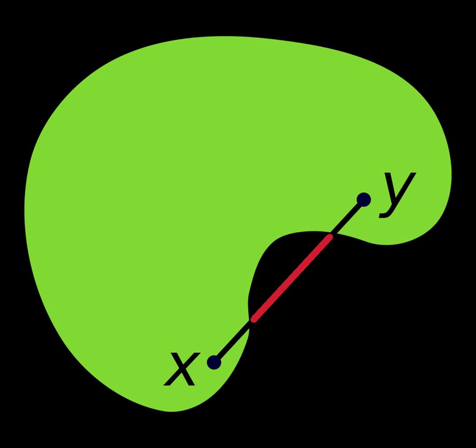Let S be a vector space over the real numbers, or more generally, over some ordered field. This includes Euclidean spaces. A set C in S is said to be convex if, for all X and Y in C and all t in the interval [0,1], the point (1-t)X plus tY also belongs to C.